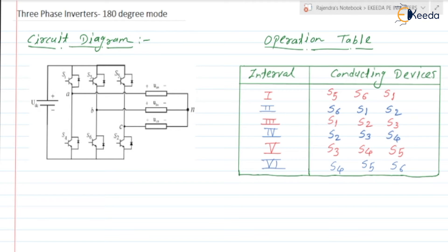The circuit consists of six switches. S1, S3, S5 form the odd numbered switches — that is the upper group. S4, S6, S2 form the lower group. For the 180 degree conduction mode, at a time three switches will be in the ON state. It is called 180 degree conduction mode because each switch conducts for 180 degrees.